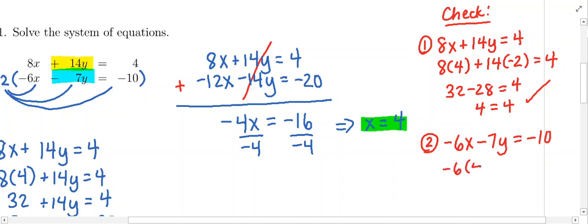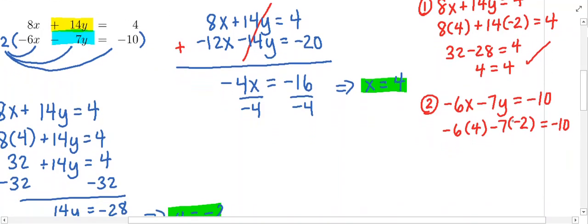Again, I'm going to plug in 4 for x and negative 2 for y. Let's see if this works out to be negative 10. Negative 6 times 4 is negative 24. Minus times minus will turn this plus. 7 times 2 is 14. Negative 24 plus 14 is negative 10, which does equal negative 10.